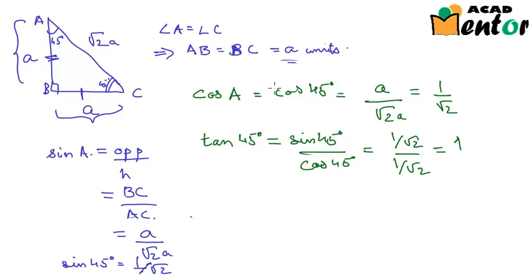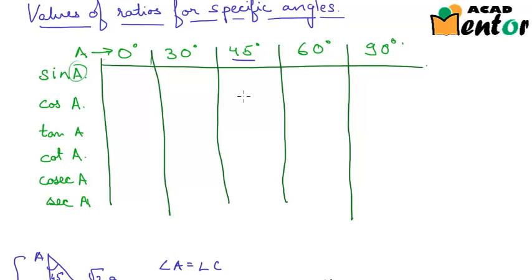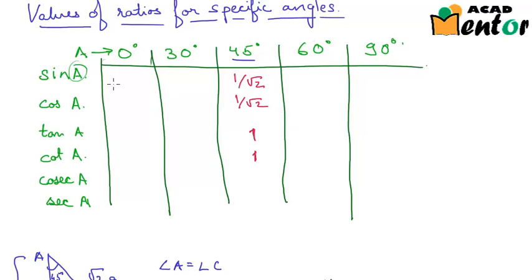Let me fill out the table. For 45 degrees: sine = 1/√2, cos = 1/√2, tan = 1. Cot of 45° is the inverse of tan, so cot 45° = 1. Cosec of 45° is the inverse of sine, so cosec 45° = √2. And sec 45° = √2. So we have one column of the table filled.